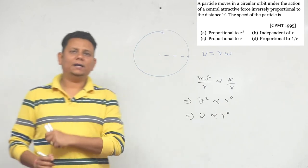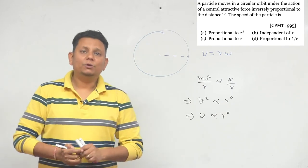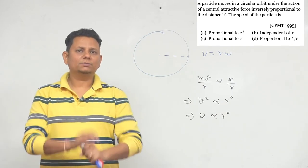Which means in this case, velocity is independent of r. So option number b would be the correct answer for this particular problem.